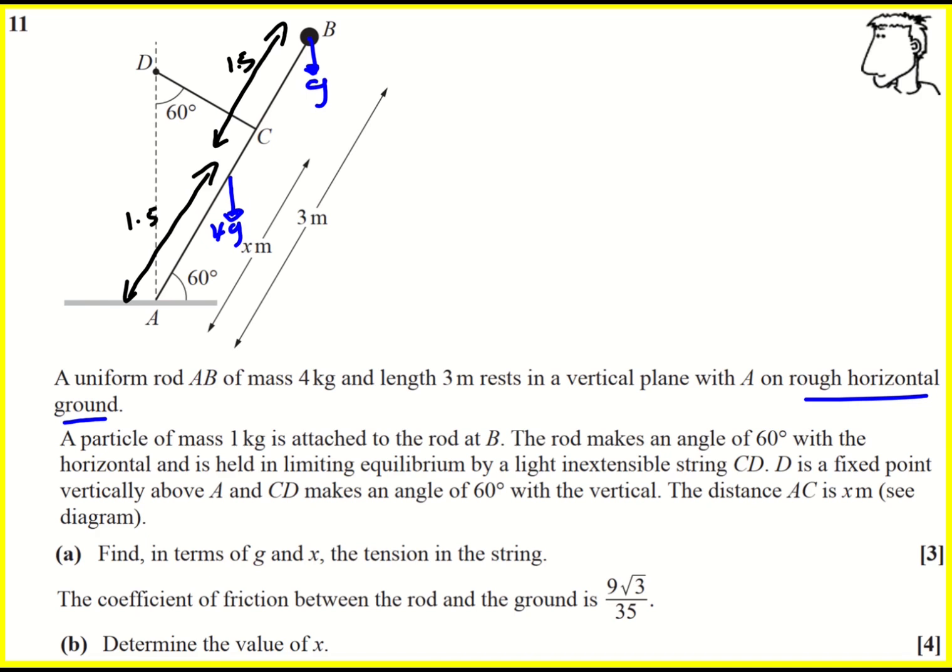The rod makes an angle of 60 degrees, that's labeled on the diagram and is held in limiting equilibrium. That means it's about to move by a light inextensible string CD. So there will be a tension acting this way. D is a fixed point vertically above A, and CD makes an angle of 60 degrees with the vertical. That's the angle at the top. The distance AC is equal to X, that's labeled on the diagram.